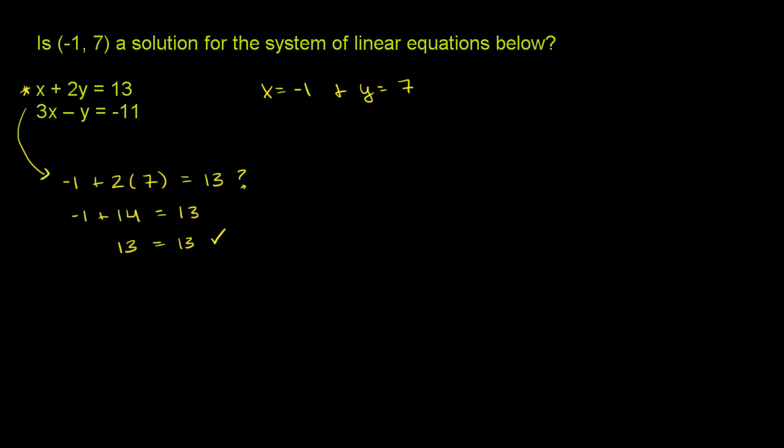Now let's look at the second equation. We have 3 times negative 1 minus y, so minus 7, needs to be equal to negative 11. I'll put a question mark here because we don't know whether it's true. So we have 3 times negative 1 is negative 3, and then we have minus 7, needs to be equal to negative 11.